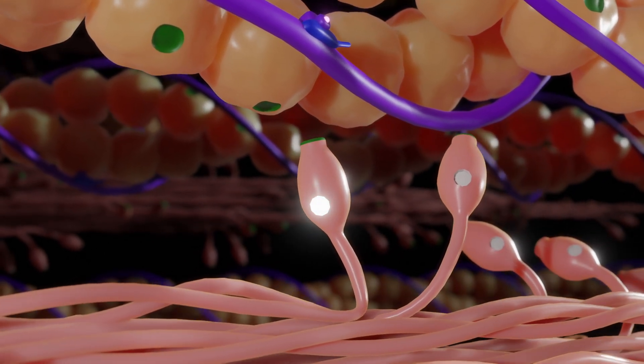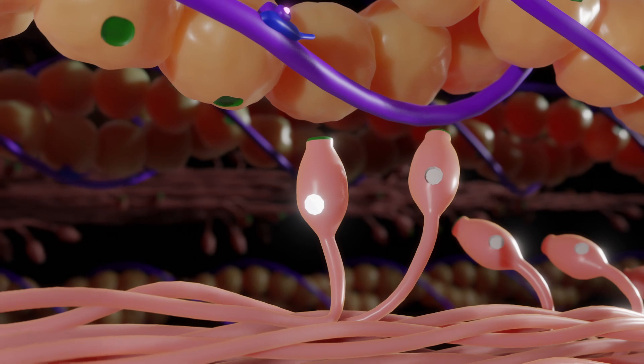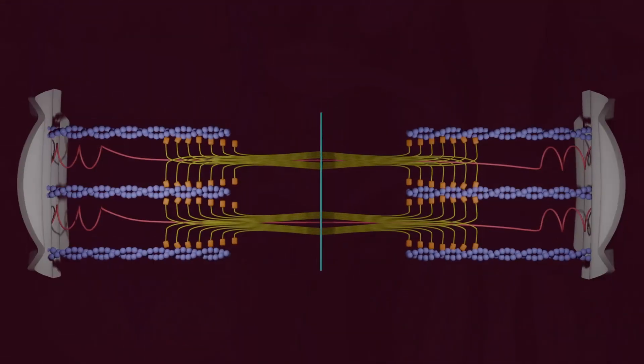The energy released by the cleavage of the ATP straightens the myosin head again, so that a new cycle can begin.